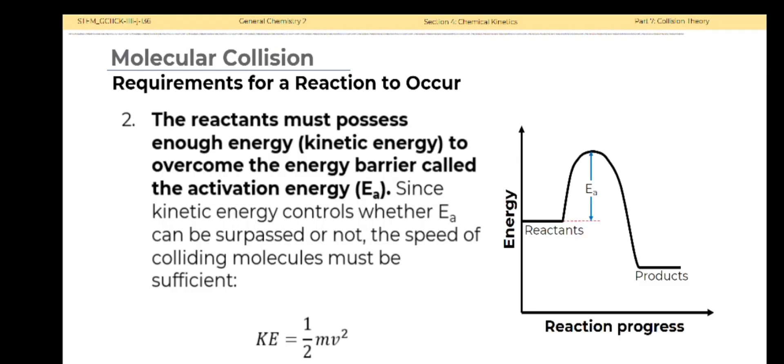The reactants must possess enough energy in the form of kinetic energy to overcome the energy barrier called the activation energy. As the reactant molecules collide to each other, energy redistribution occurs which arises from various bond-forming and bond-breaking processes. Since kinetic energy controls whether the activation energy can be surpassed or not, the speed of colliding molecules must be sufficient.